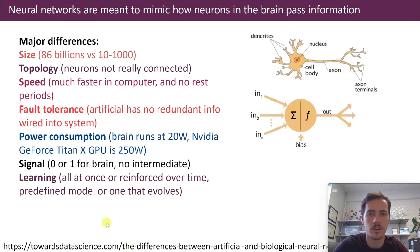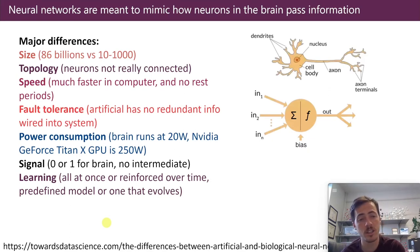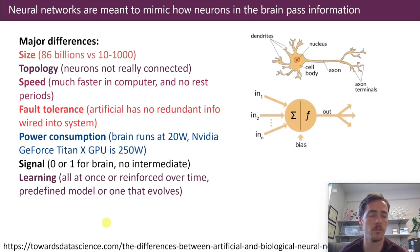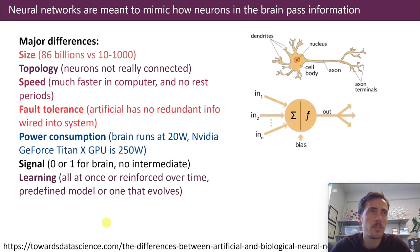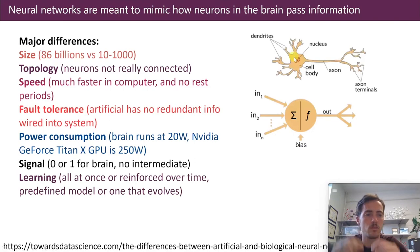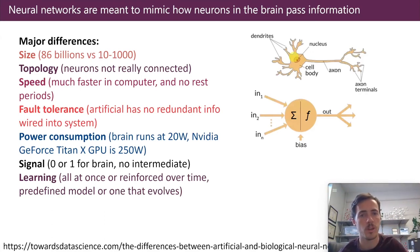In a brain, you have neurons that pass messages to other neurons. In a neural network, you have nodes which receive information and pass information forward. There are similarities, but also many differences. For example, the size is very different: 86 billion neurons in your brain versus 10 to 1,000 nodes in an average neural network. The topology is also different — not all neurons are fully connected layer to layer in the brain, but that's typically what happens in machine learning neural networks. Speed is different too; computers send information from node to node much faster. There's also a fault tolerance difference: in an artificial system there's no redundant information, whereas in the brain neurons that wire together fire together, providing redundancy.